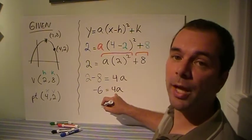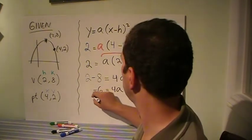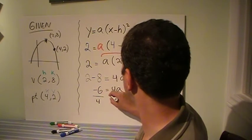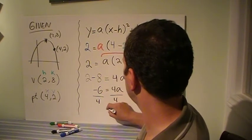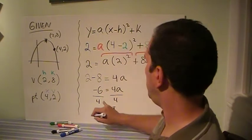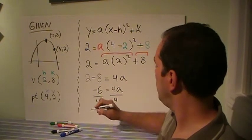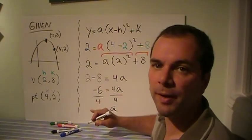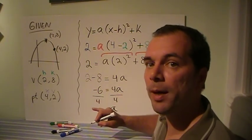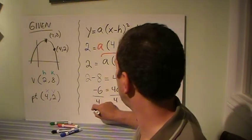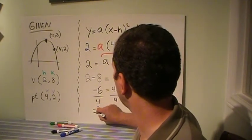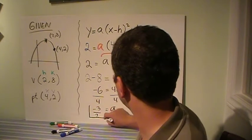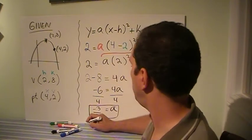So get rid of that 4, because of the a, I'm going to divide both sides by 4. And I get that a is equal to minus 6 over 4, which can be simplified if I divide both top and bottom by 2. So it's minus 3 over 2.